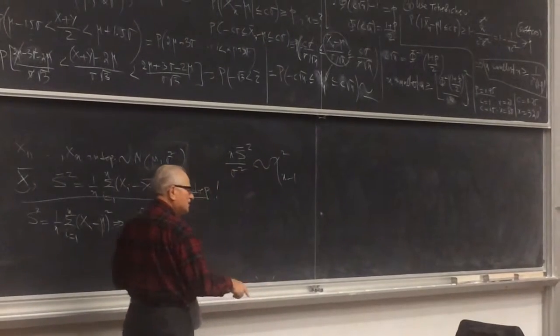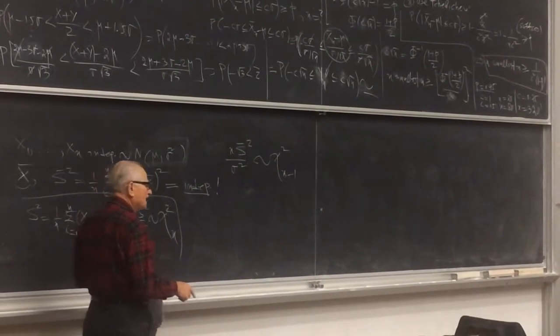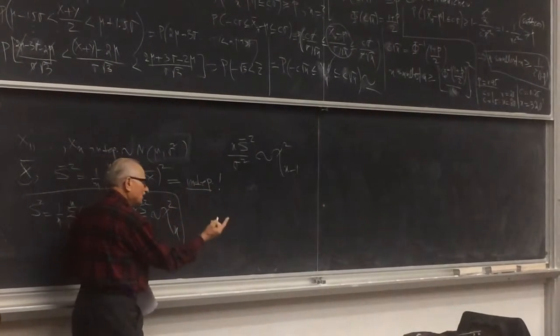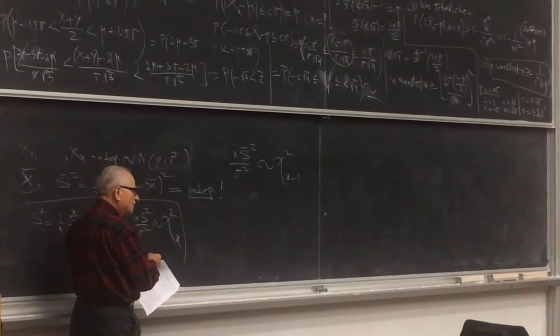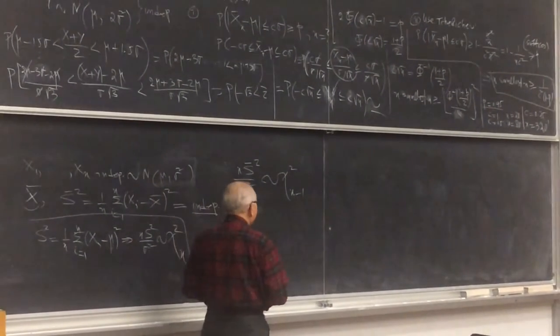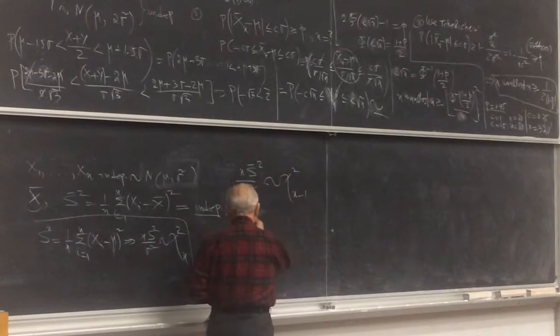So it is the same distribution, chi-square divided by sigma squared, only the degrees of freedom, what we need is n minus 1, because we replace mu. Intuitively, if you do something, mess up, you have to pay something. What is the justification of it?